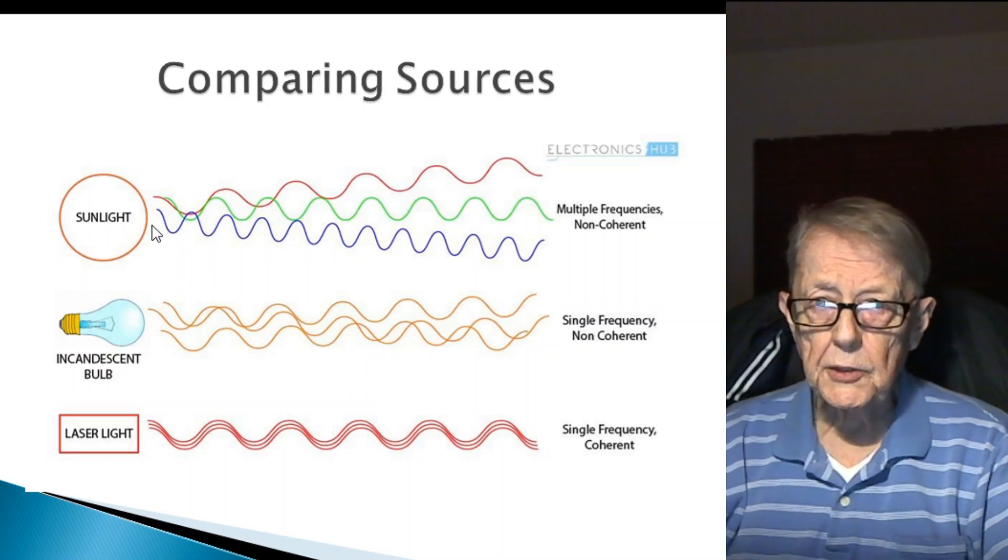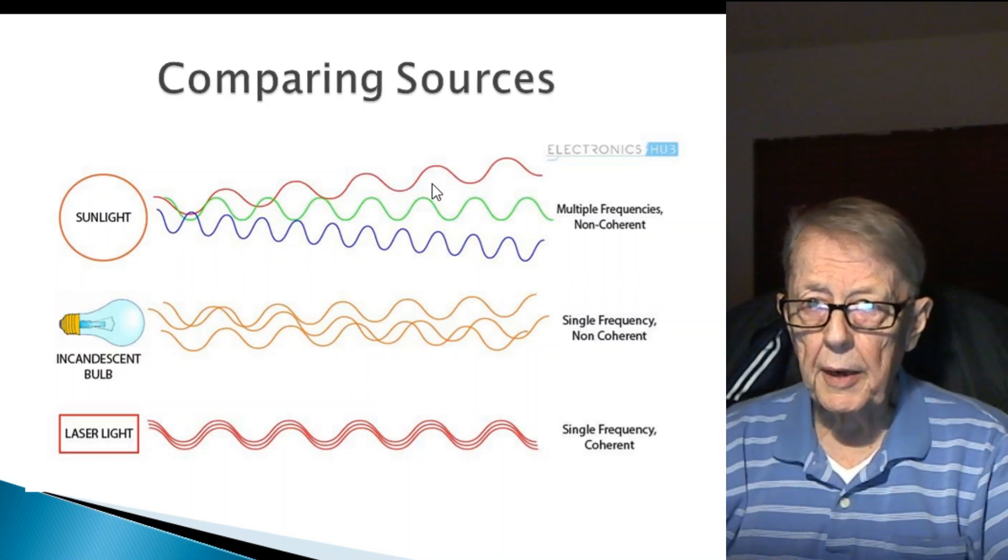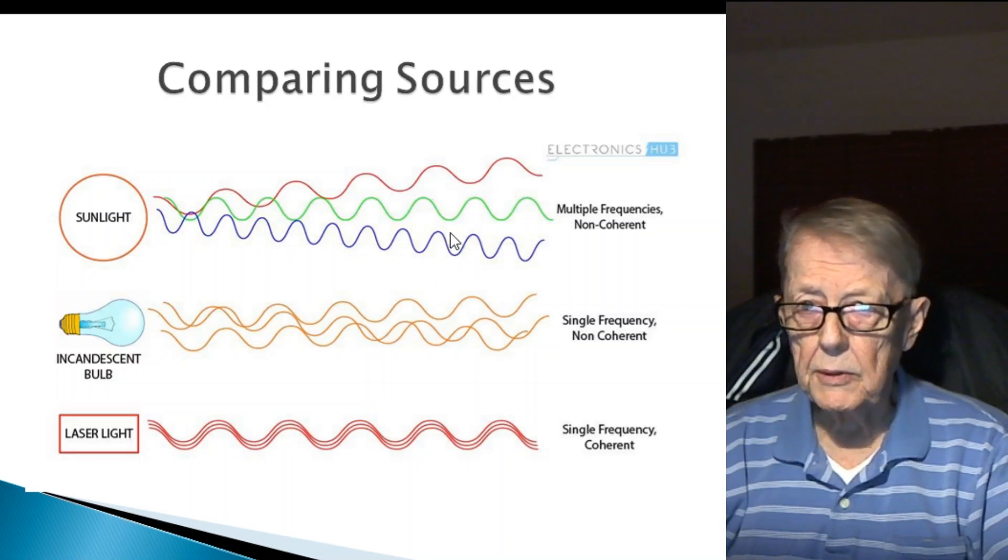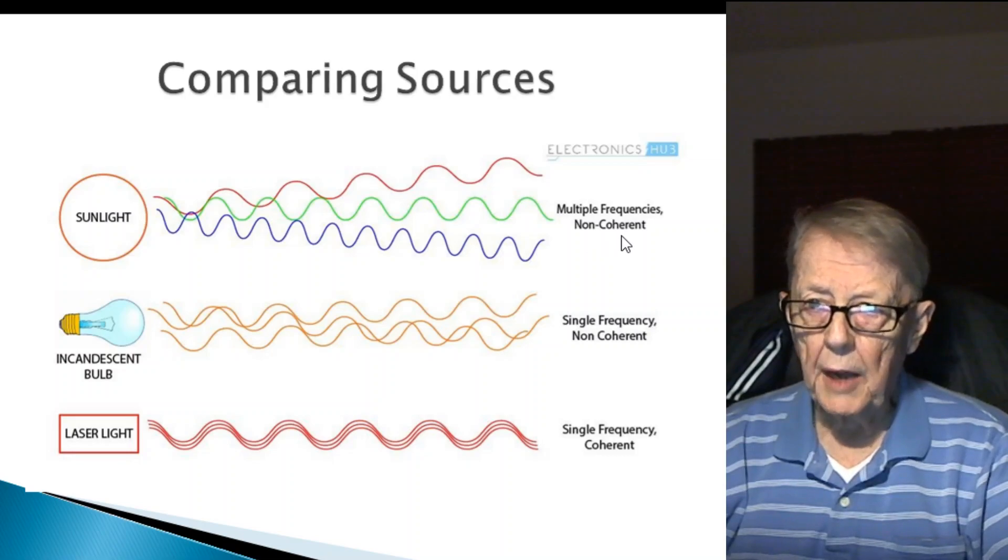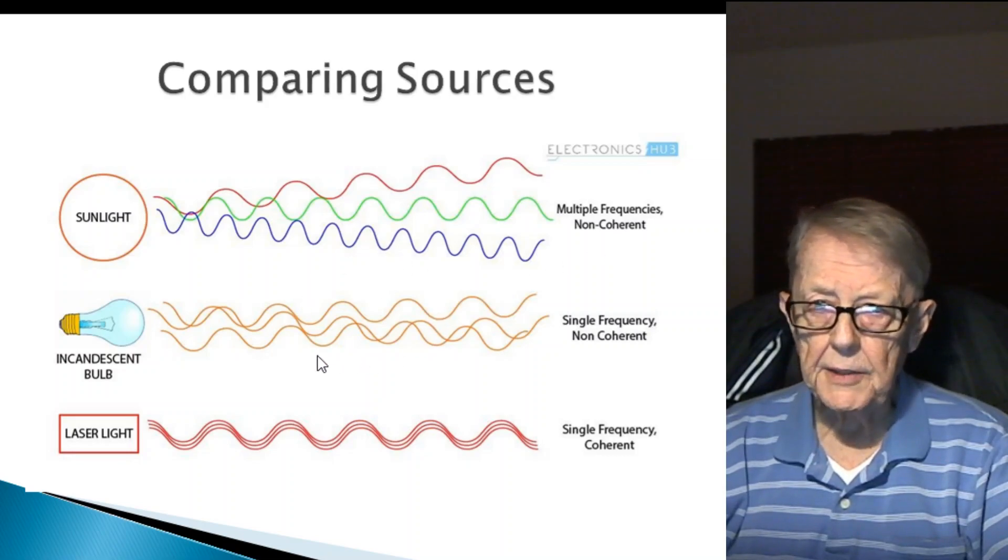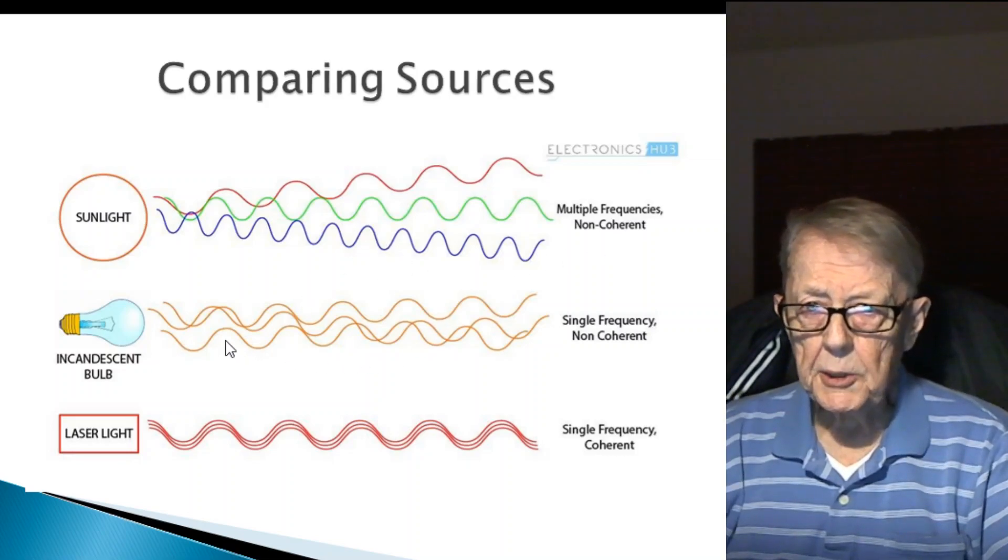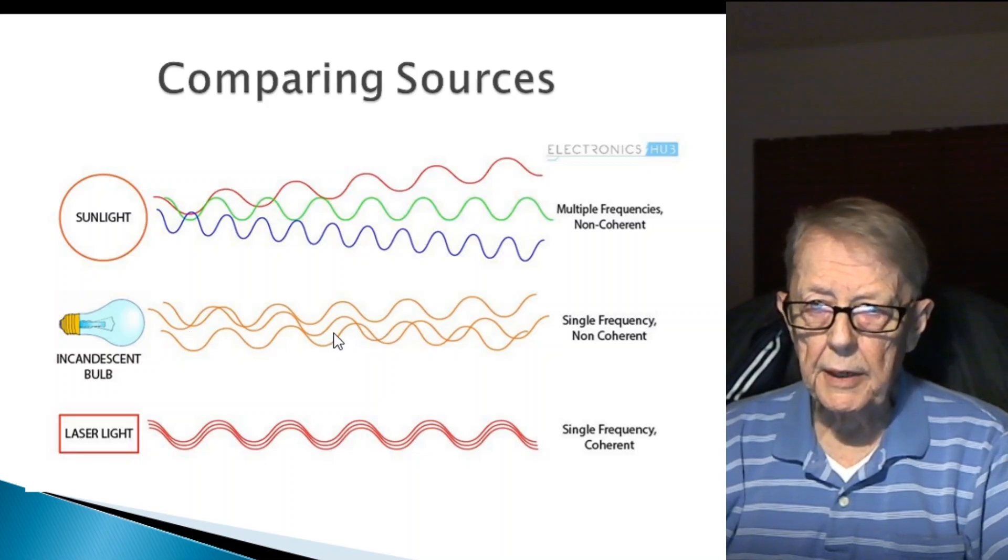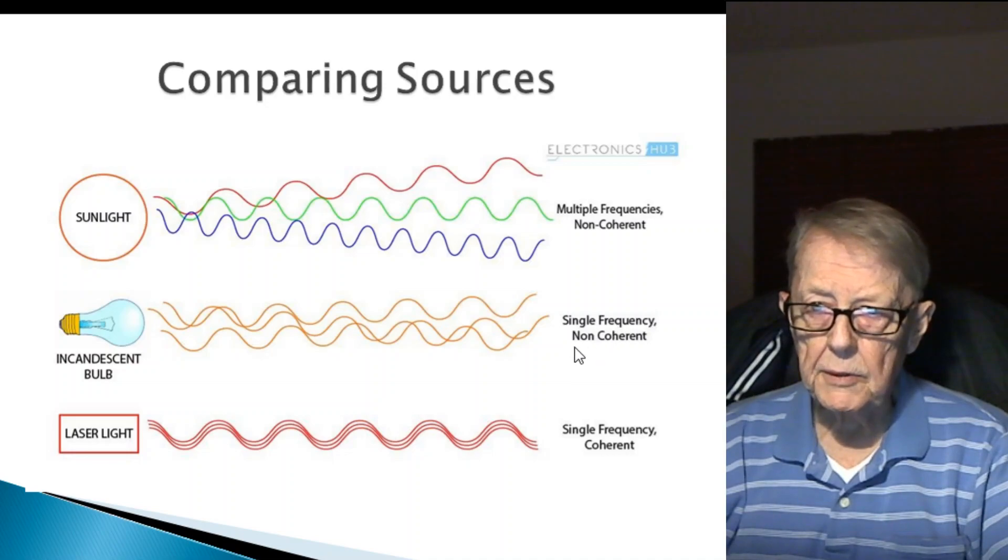Just comparing sources: sunlight is random light with red, green, and blue frequencies. Multiple frequencies, non-coherent means they're not in phase. An incandescent bulb. Well, this is a special incandescent bulb. It looks like it has an amber light, which is single frequency, but it's non-coherent because it's not in phase.